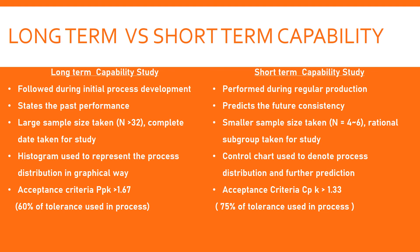Normally people get confused — thinking long-term should be used in regular run and short-term in the initial run. Don't go by the name. Just understand: PPK is done during initial studies, and CPK is followed in regular production. The acceptance criteria also varies — for initial study we give a stringent target of 1.67, and for the longer regular run, 1.33 for CPK is acceptable. So PPK is the new development or initial batch process capability index, and CPK is the regular production process capability index. This is the key difference. Acceptance criteria, calculation methods, and sample batches all vary between the two cases.